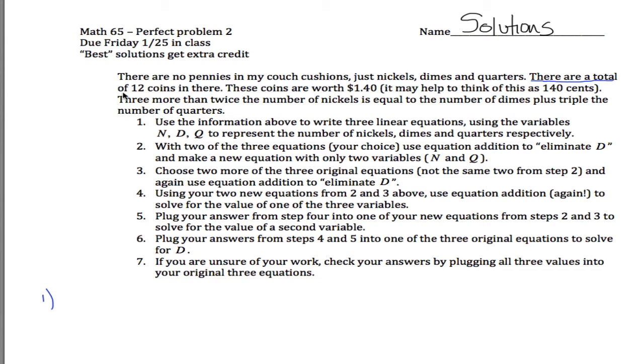Then this first sentence says there are a total of 12 coins. So what that tells me is the number of nickels plus the number of dimes plus the number of quarters must be equal to 12.